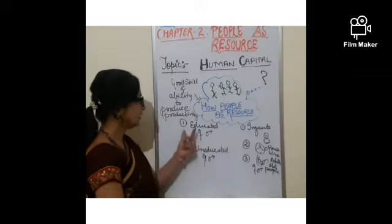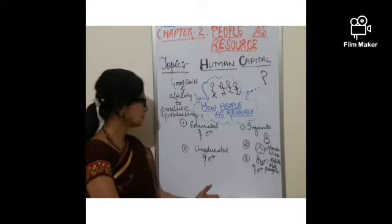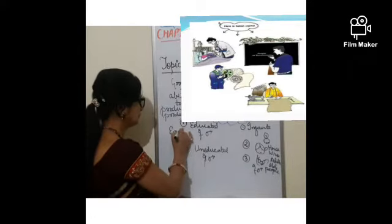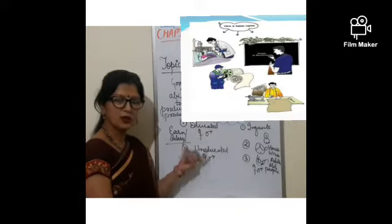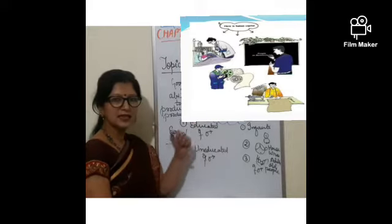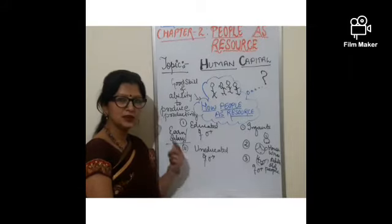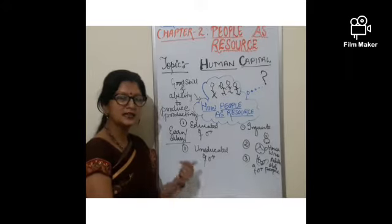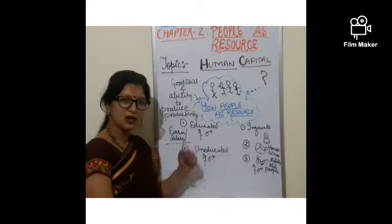Being educated does not automatically make someone a resource for the nation, because sometimes educated people remain unemployed. Only those who earn a salary and do productive work for firms, industries, or institutions are called resources. Educated people who remain idle at home and are not productive for national income are called non-productive and are not part of 'people as resource.'